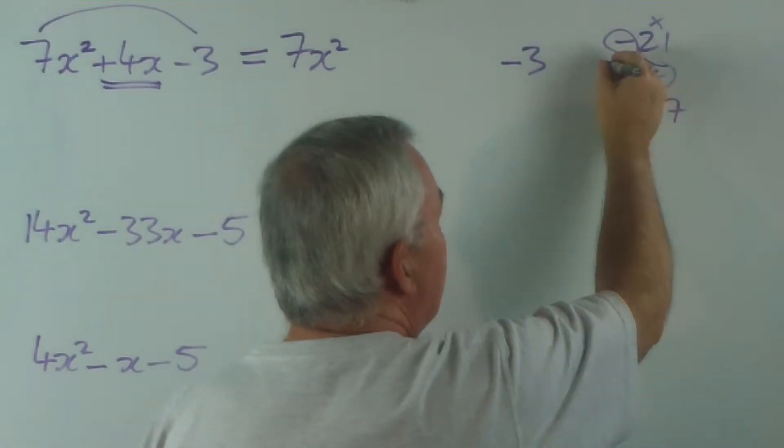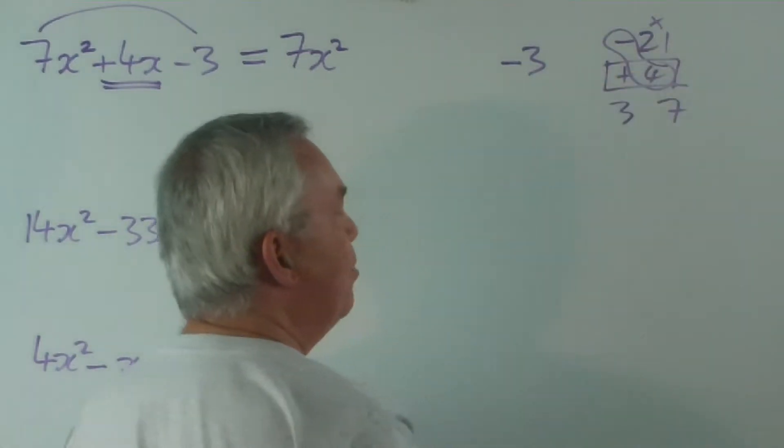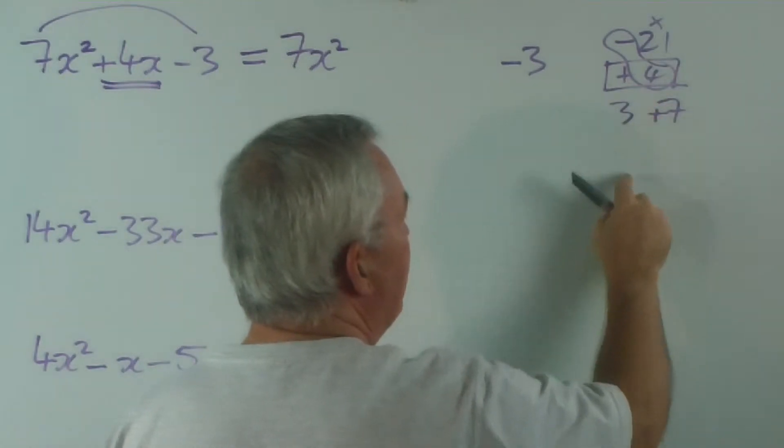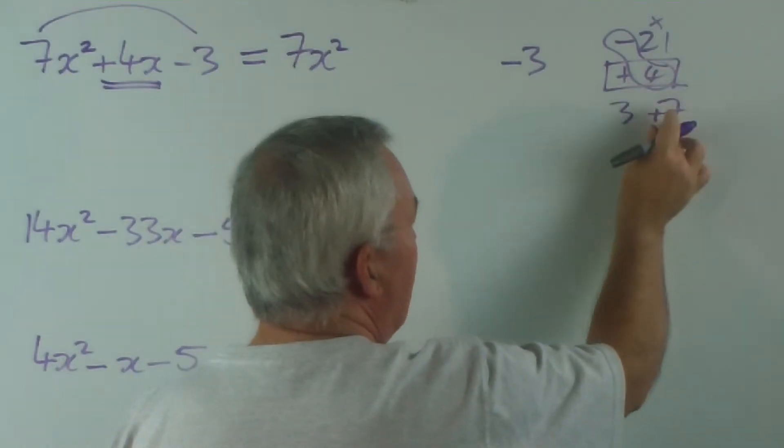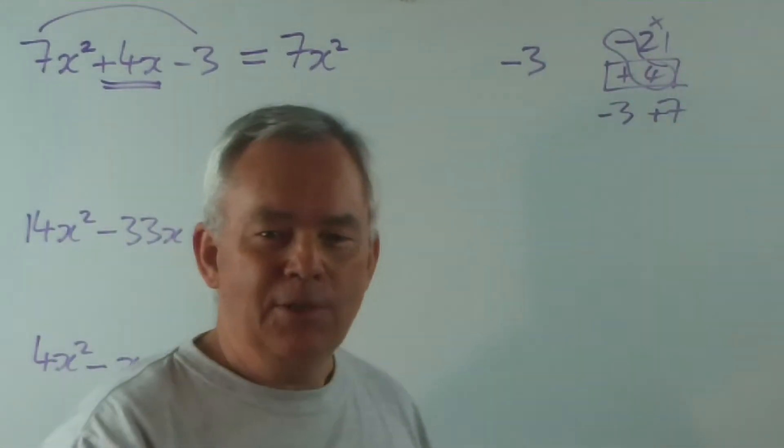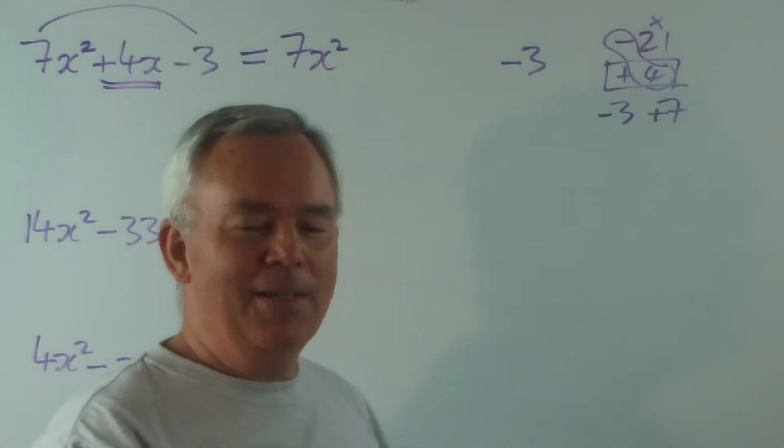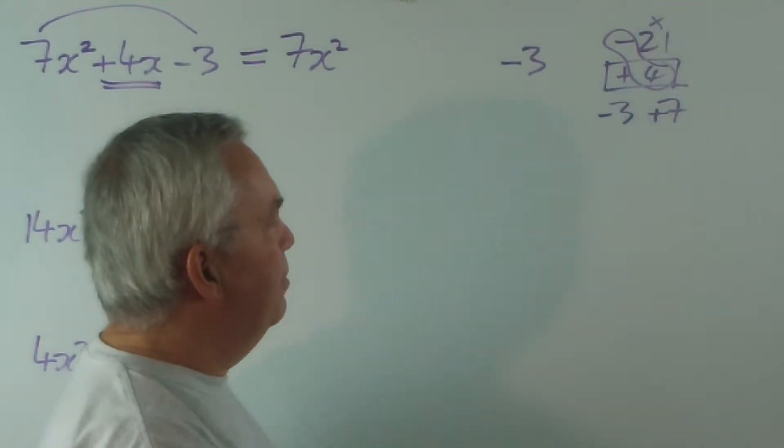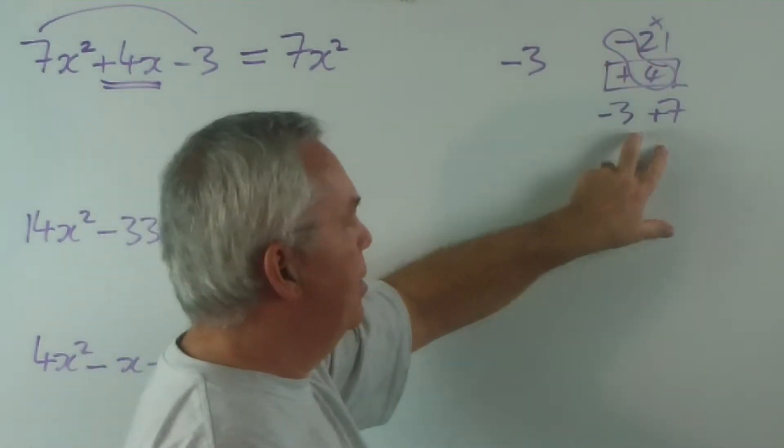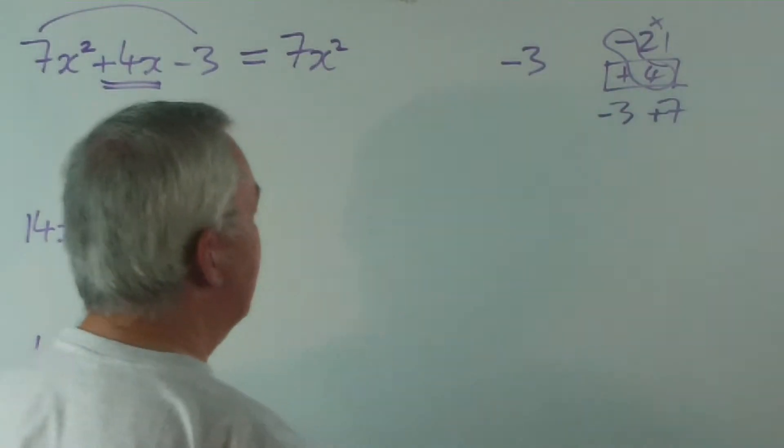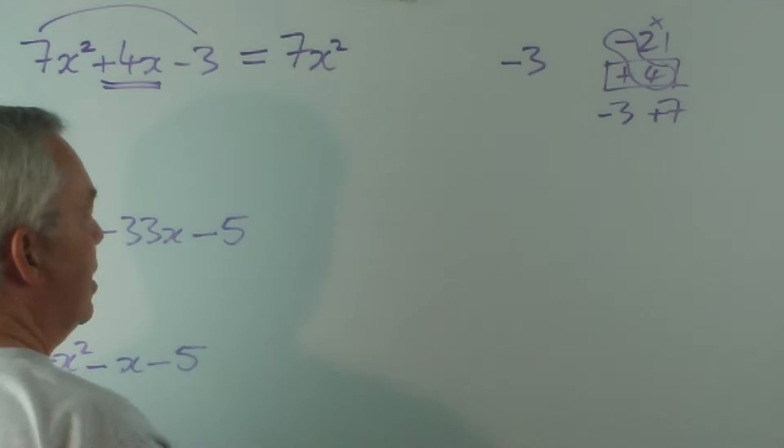Once we know what the numbers are, we ask ourselves, how do we get a plus 4? Well, the big number has to have the plus sign, and we have to go, if we start at plus 7, we go down 3 to get to 4. If that sounded like so much gobbledygook to you, then I encourage you to watch my previous video and understand the technique. But, it's just a method I have for finding the numbers first and then the plus and minus signs second, in two separate steps.